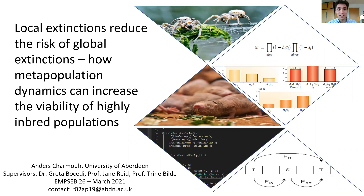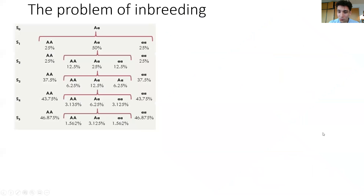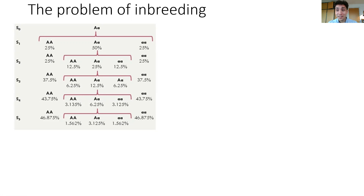And that's what I'll be talking about today. Before going to that, it might be useful to give a little bit of background. Why would we expect highly inbred populations to be more likely to go extinct? What are the genetical consequences when relatives just decide to get it on? Well, to explain that, I've shown a little diagram here, and this shows self-fertilization over a few consecutive generations.